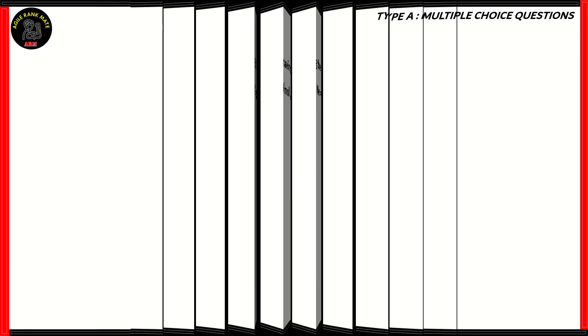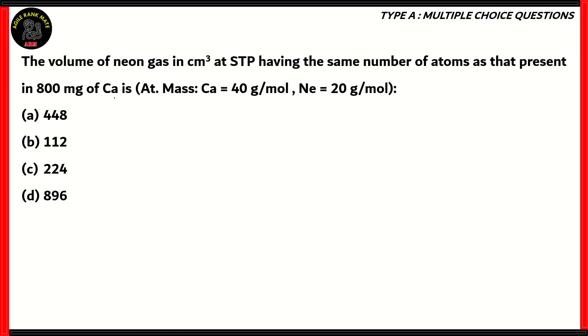So let's look at another question. The volume of neon gas in centimeter cubed at standard temperature and pressure having the same number of atoms as that present in 800 milligrams of calcium is. We have the atomic mass of calcium as 40, atomic mass of neon as 20. So how do we solve this question? We need to first calculate the number of atoms in 800 milligrams of calcium and then using that same number of atoms, we will calculate the volume of neon gas.